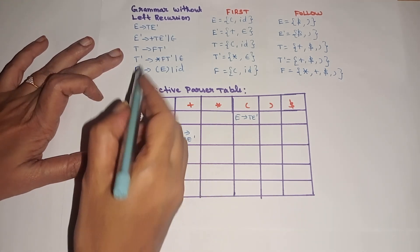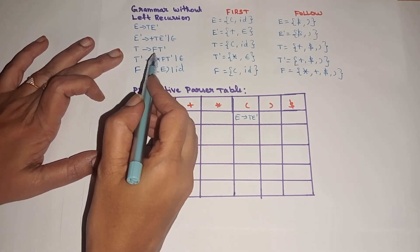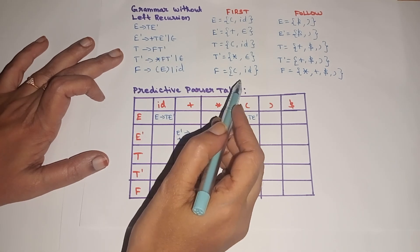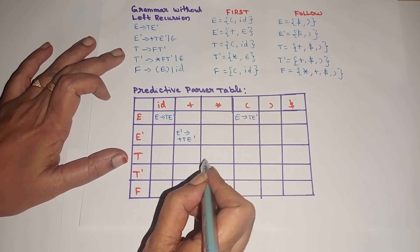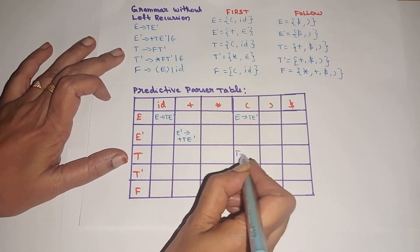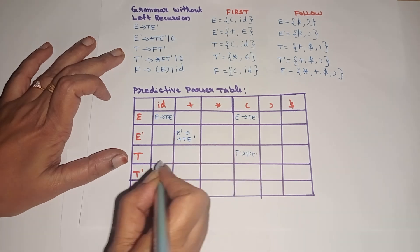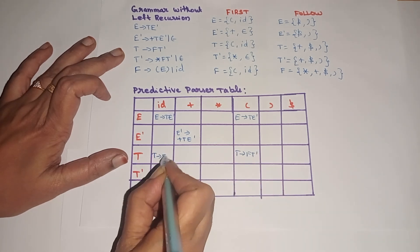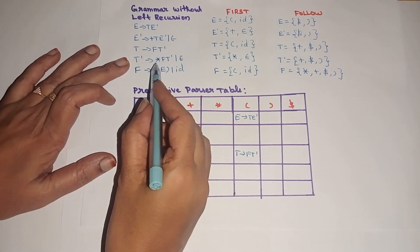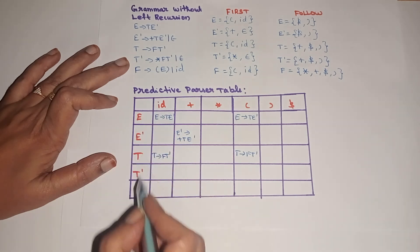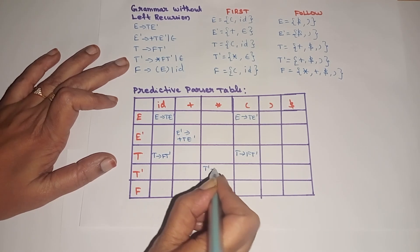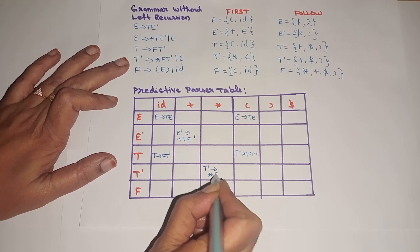For T tends to F T-dash, first of F is {open parenthesis, id}, so in row T, columns open parenthesis and id, we include T tends to F T-dash. For T-dash tends to star F T-dash, star is a terminal, so first of star is star. In row T-dash, column star, we include T-dash tends to star F T-dash.